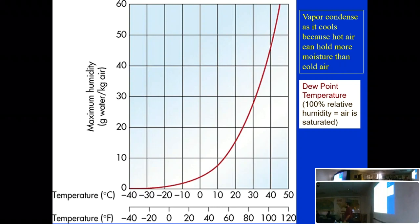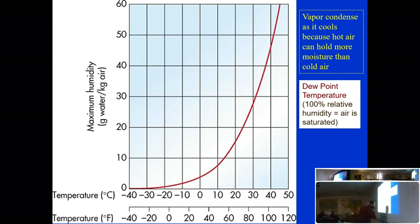When that cooling reaches the dew point, heat will start being released as condensation occurs. That release of latent heat is what causes the two different types of adiabatic lapse rate — the dry and the wet.